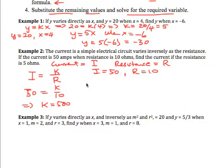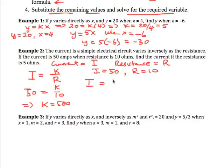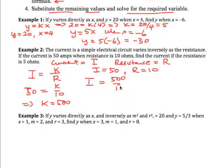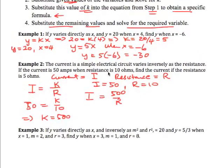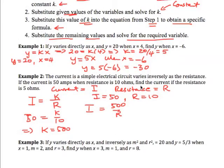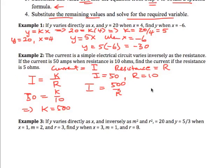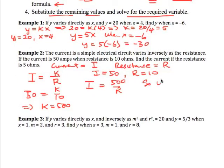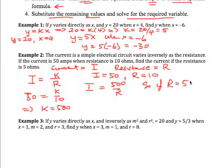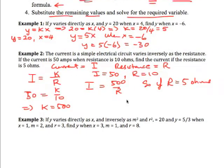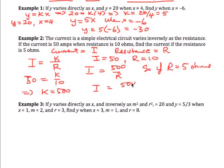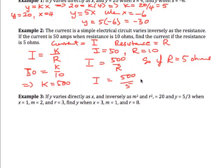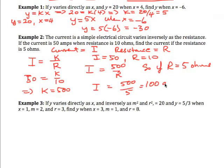So our actual formula then is I equals 500 over R. And we're now told find the current if the resistance is 5 ohms. So if R is equal to 5 ohms, then I is equal to 500 over 5, which of course is 100 amps.